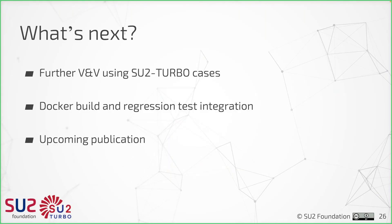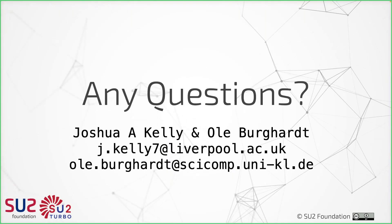There's still some work to do but we're making progress. Next steps include further verification and validation using the SU2 regression test cases that Mateo talked about, and integrating this into the regression test pipeline on GitHub — so even if you're not interested in turbomachinery, if you're developing new adjoint capabilities you can easily use this to test whether you're doing things correctly. Further down the line there will be a publication, so keep your eyes peeled. Thank you — does anyone have any questions?